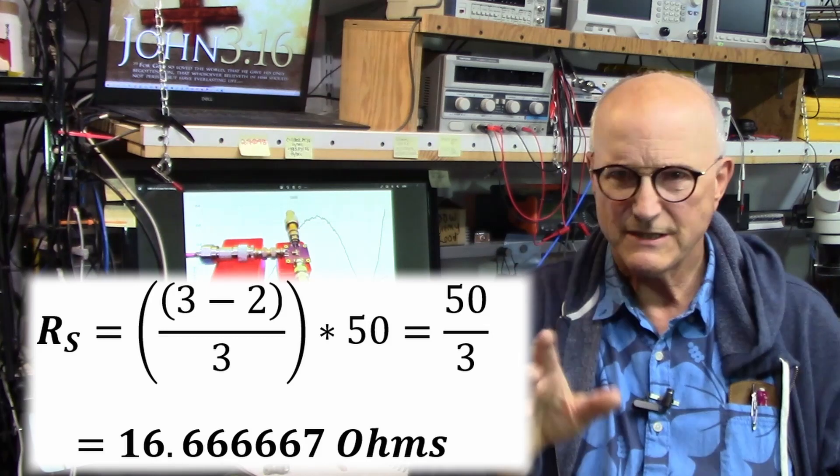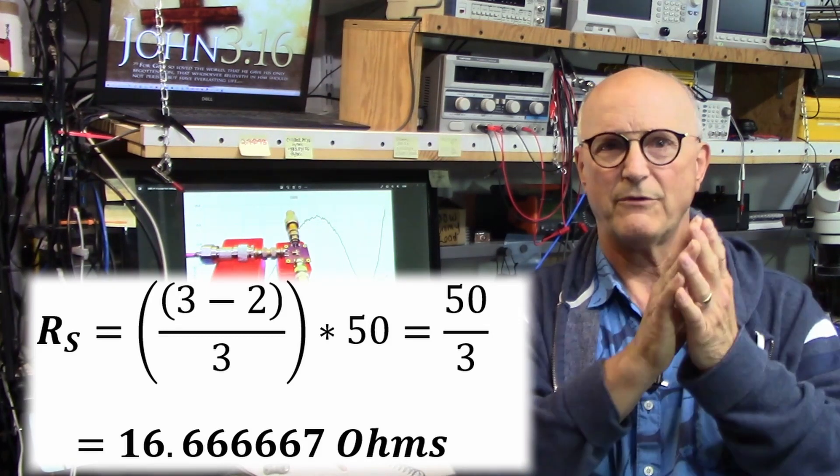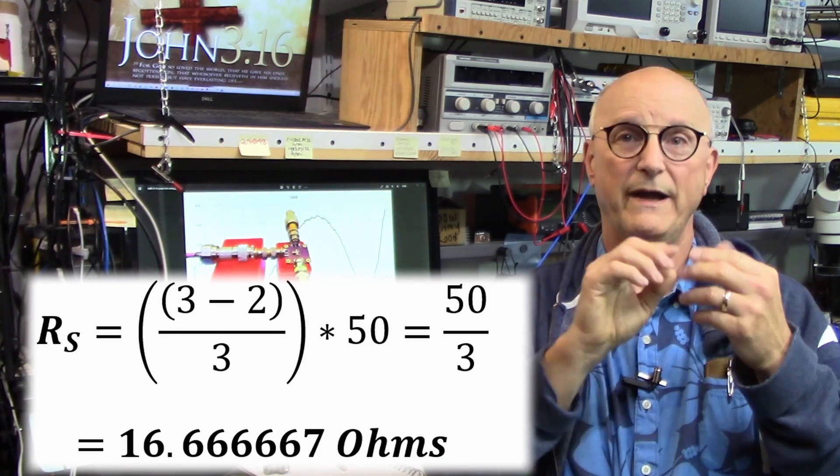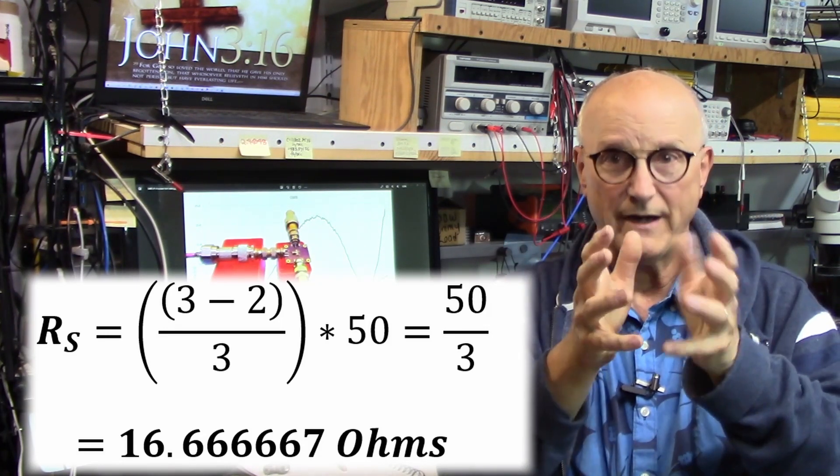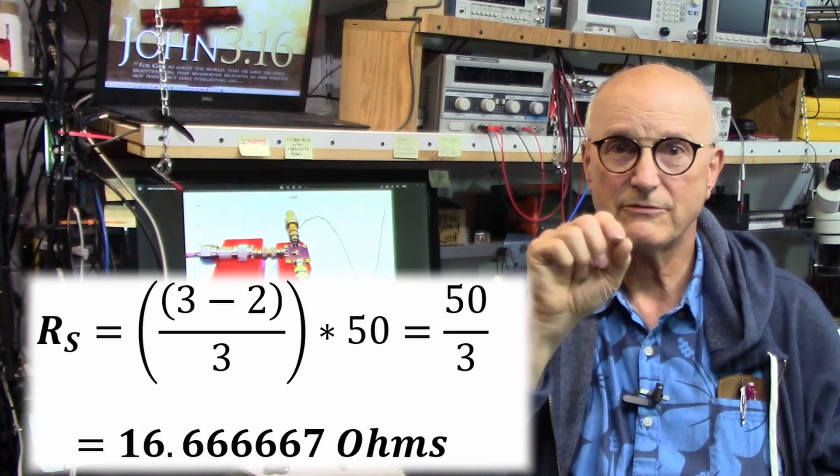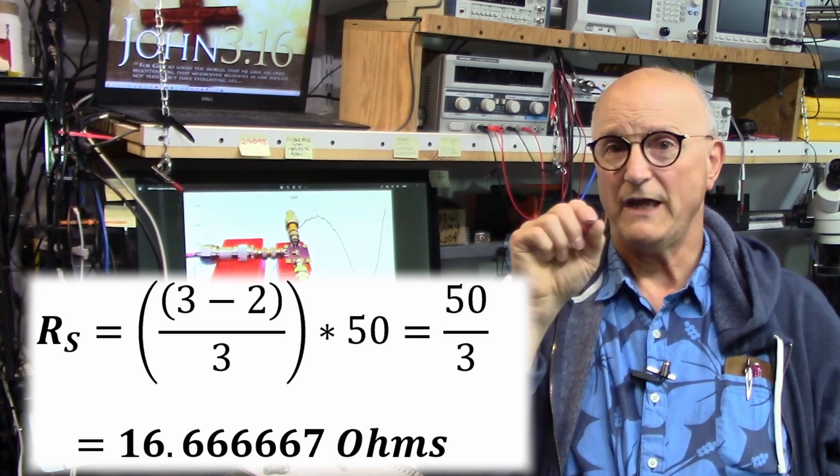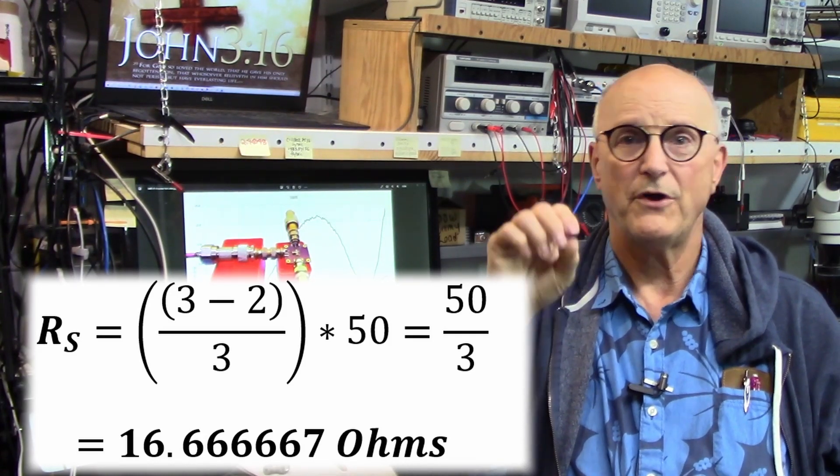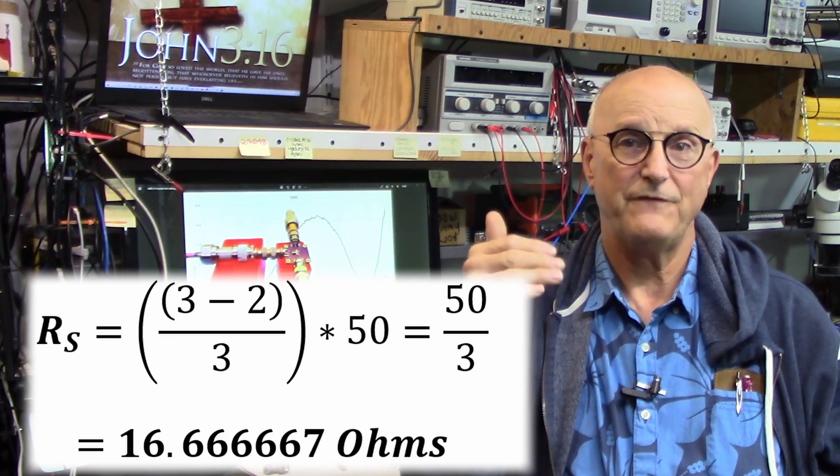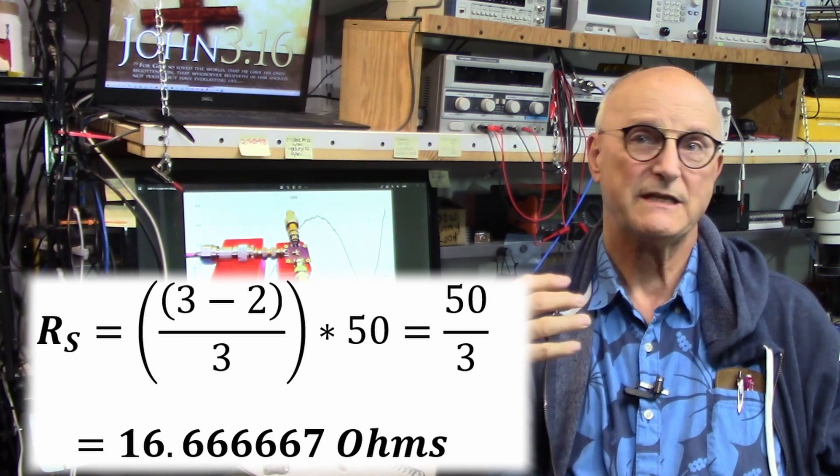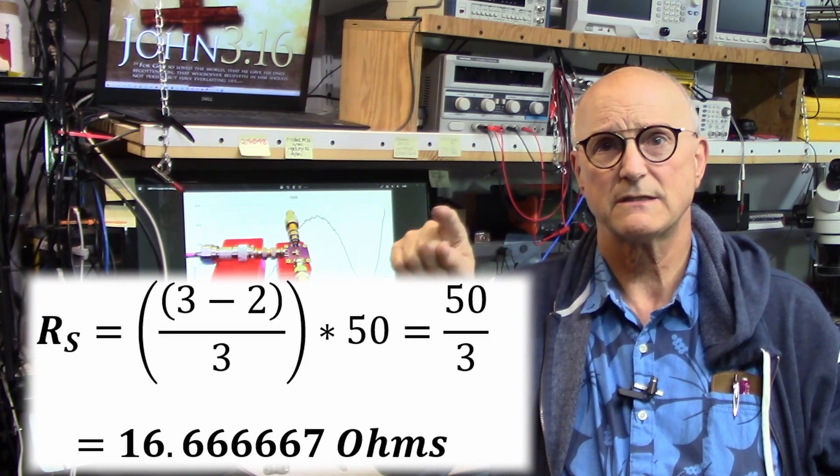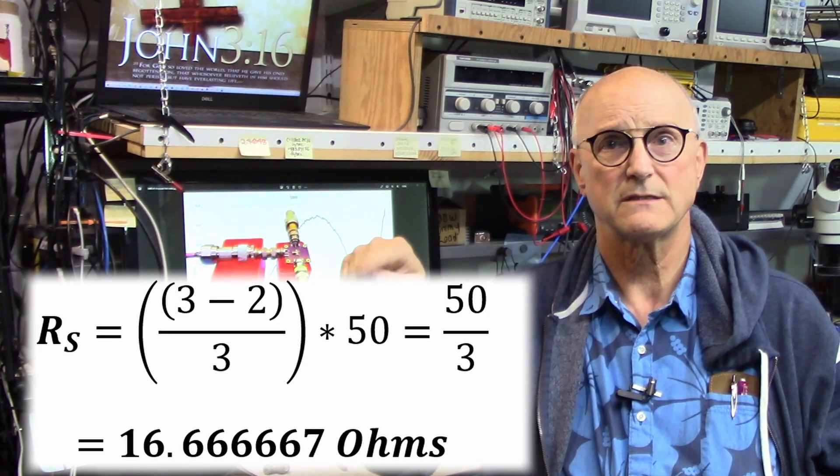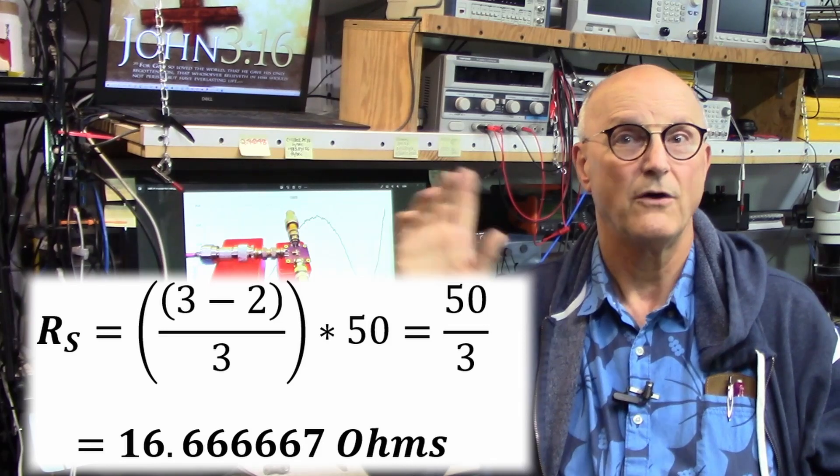The series resistor is going to be equal to the number of ports, which is 3 minus 2, all divided by the number of ports, and that quantity times the characteristic impedance, which ends up giving me one-third of 50 or 50 over 3, which is 16.666666 lots of 6 ohms.